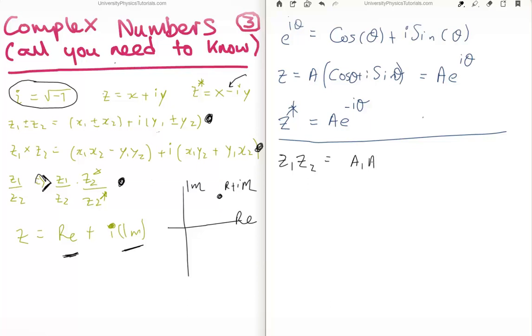For example, z1, z2 becomes a1, a2 outside of e to the i theta1 plus theta2. If we take the, that's, excuse me, that's multiplication. Addition is straightforward as well. What if we look at division? Division was something which was reasonably difficult the last time. We had a procedure multiplying above and below by the complex conjugate. But here what we get is a1 over a2. And we have e to the i theta1 minus theta2. That's pretty straightforward.